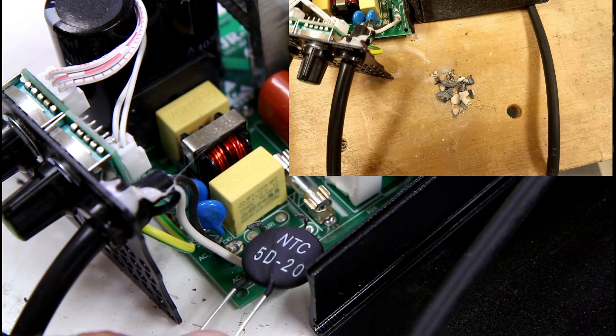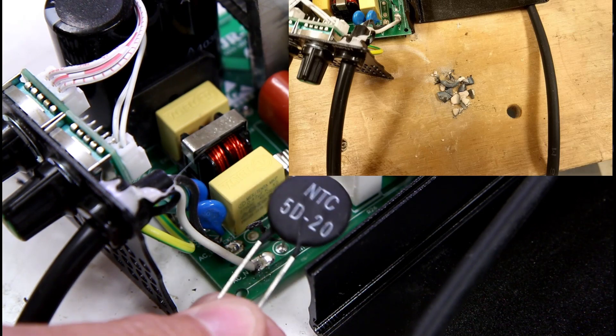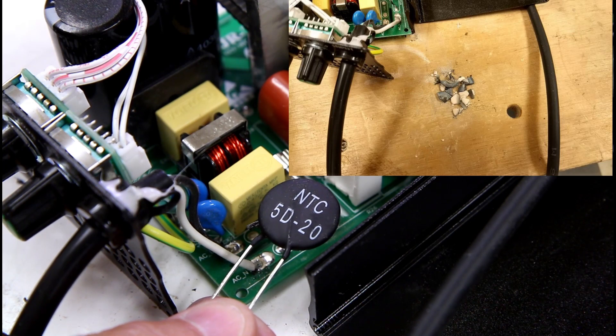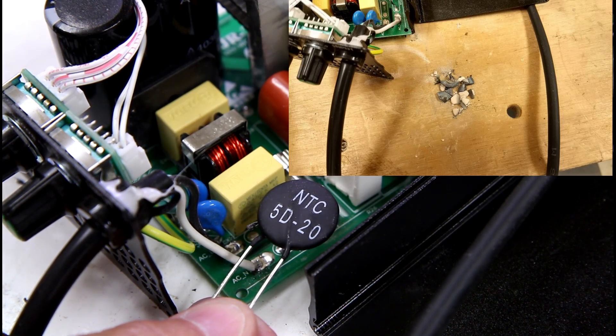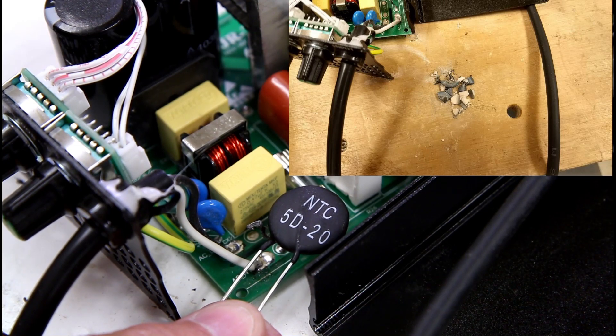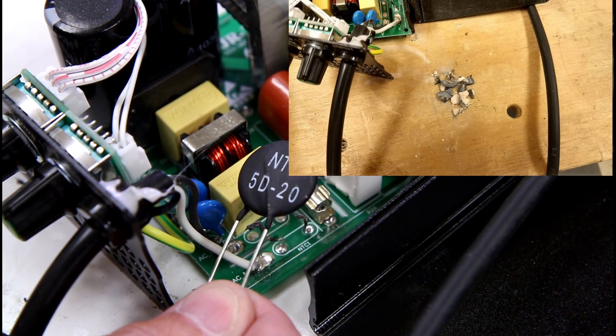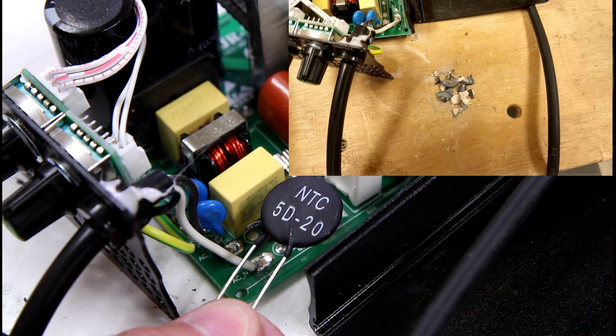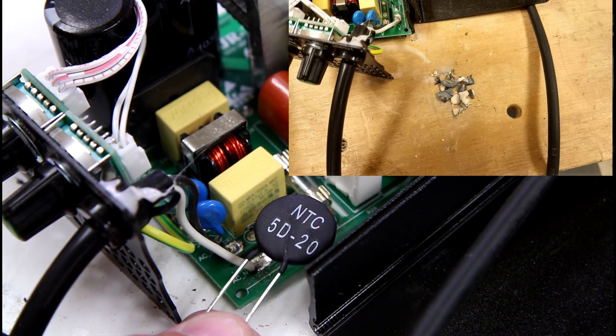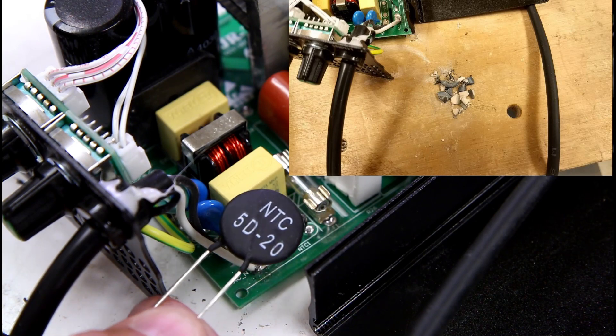So how these things work, this is in line with the input power to the supply. It's just a, think of it as a resistor that has high resistance at low temperature. So when you turn on the power supply initially it has a high resistance which reduces the surge currents into the power supply which protects the other components from wear and tear.